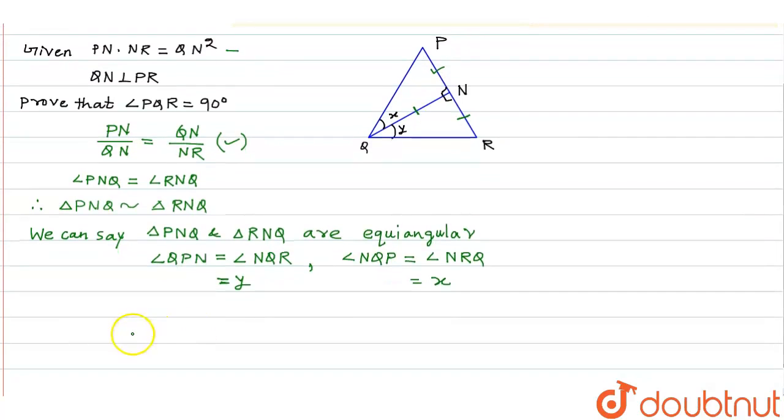Now in triangle PQR, we know sum of all angles is 90 degrees. So here angle P is equal to Y, angle R is equal to X, and angle Q is equal to X plus Y. Now sum of all angles is: